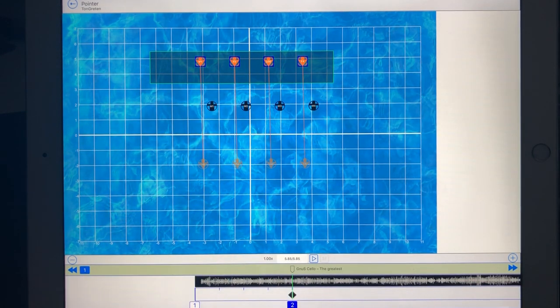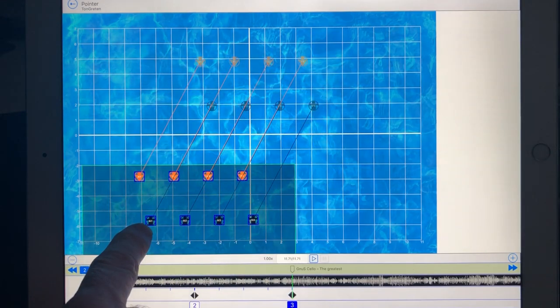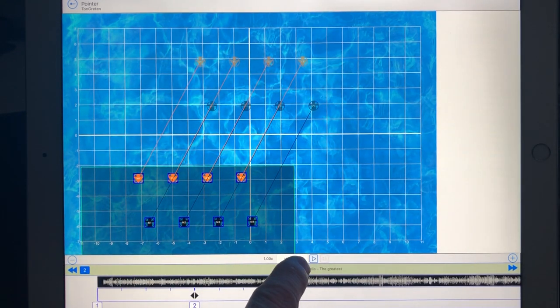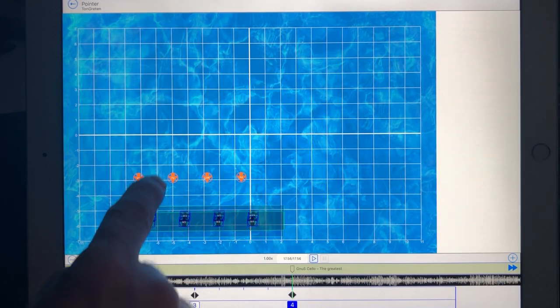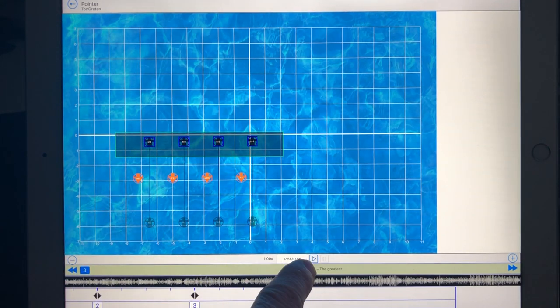Tap twice on the screen. Again, select the dancers. Tap twice on the screen. The boys tap twice on the screen.